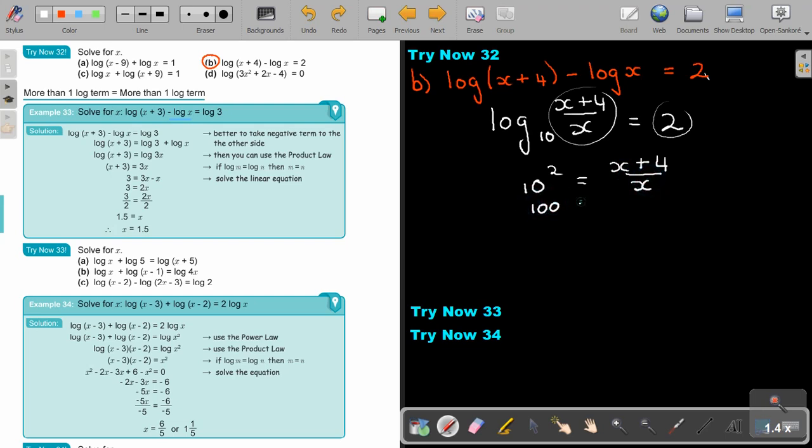So 100 equals x plus 4 over x. Put it over 1. So 100x equals x plus 4. So it's 100x minus x, which will be equal to 4. Let me just check something quickly. So then this will be 99x equals 4. I divide 99 and I divide 99.